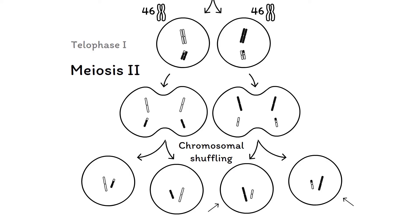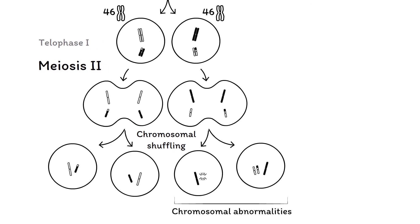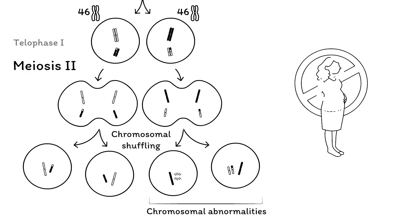However, mistakes can happen during these processes, which can lead to chromosomal abnormalities with big consequences. They are, for instance, the leading cause of pregnancy loss, with about 50% of spontaneous abortions in the first trimester caused by chromosomal abnormalities.